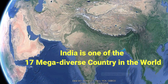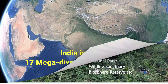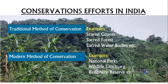To begin with, India is one of the 17 mega-diverse nations in the world. Therefore, to protect and conserve its biodiversity, multiple approaches and efforts have been adopted in the country, and the conservation efforts are categorized into the traditional conservation method and the modern conservation method.